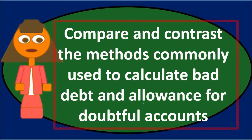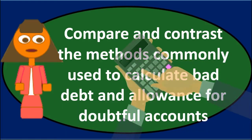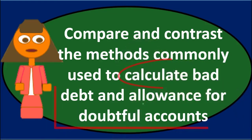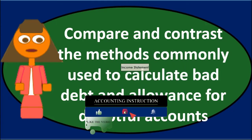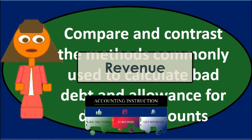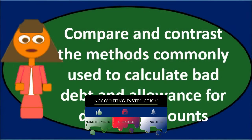We will assume we are talking about the allowance method when calculating both bad debt and the allowance for doubtful accounts. There are two methods to calculate it. I typically think of accounts receivable and its potential overstatement rather than the income statement side — meaning I take a balance sheet approach to the problem.